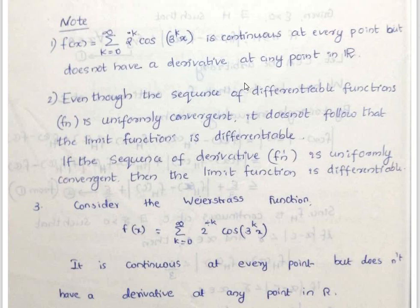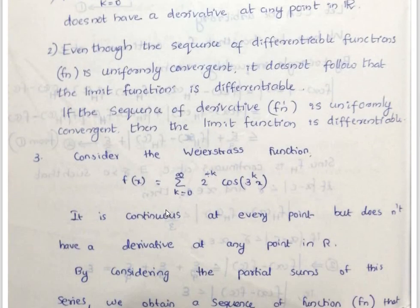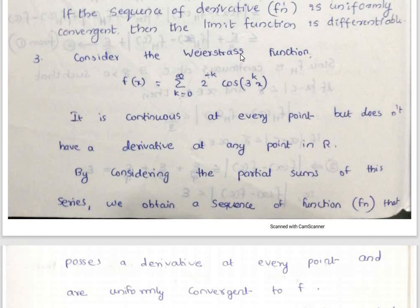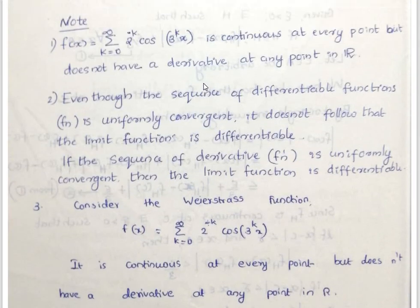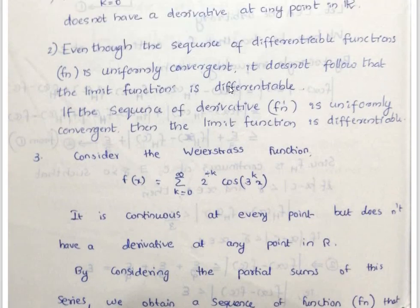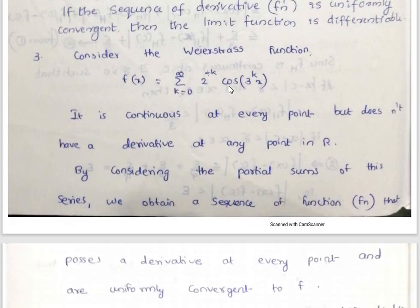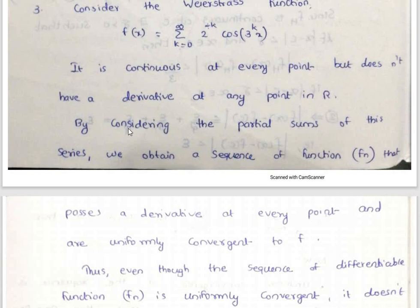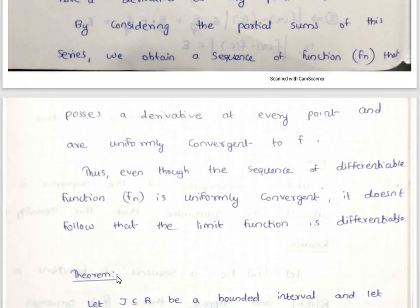So while a continuous function's uniform limit is continuous, a differentiable function's uniform limit is not necessarily differentiable. By considering the partial sums of the series f(x) = sigma k=0 to infinity 2^(-k) cos(3^k x), we obtain a sequence of functions fn that possesses a derivative at every point and converges uniformly to f.